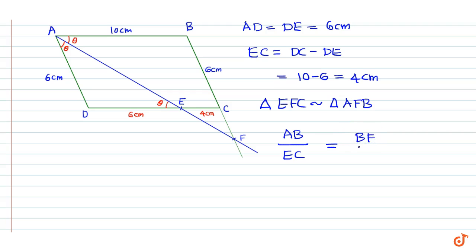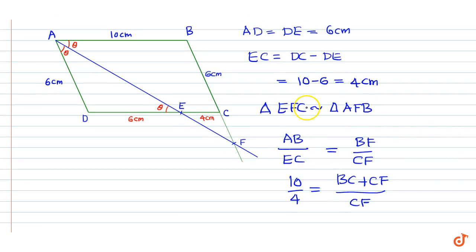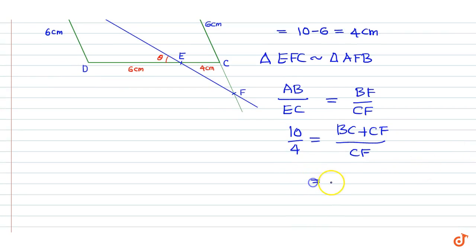AB is equal to 10 centimeters and EC is equal to 4 centimeters, so we get 10 divided by 4 equal to BF divided by CF. That is BF equals BC plus CF. Now BC is equal to 6 centimeters, so we can write this as 6 plus CF divided by CF.